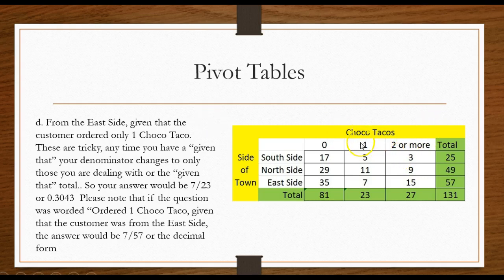Given that they got one Choco Taco is 23. So be careful on these, they're easy to do, and just remember when you see the term given that, know that your denominator is going to change.